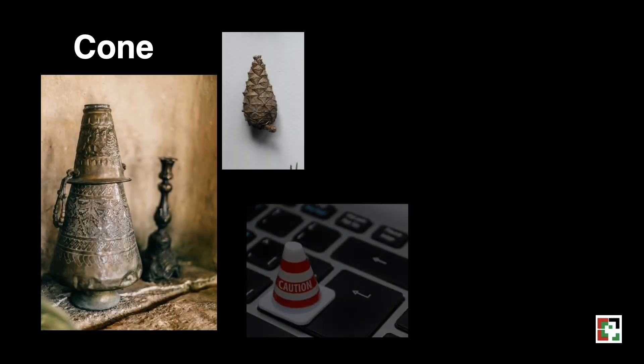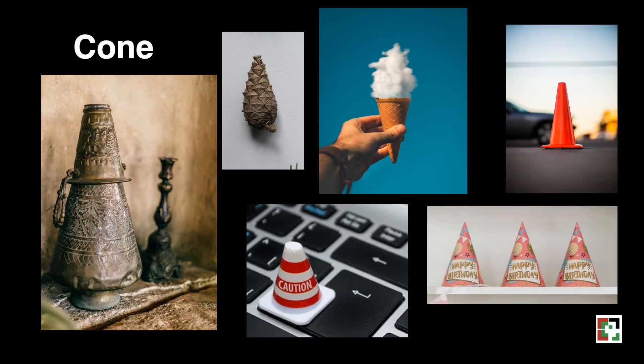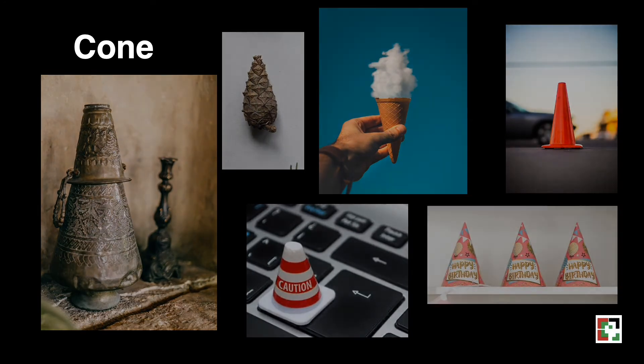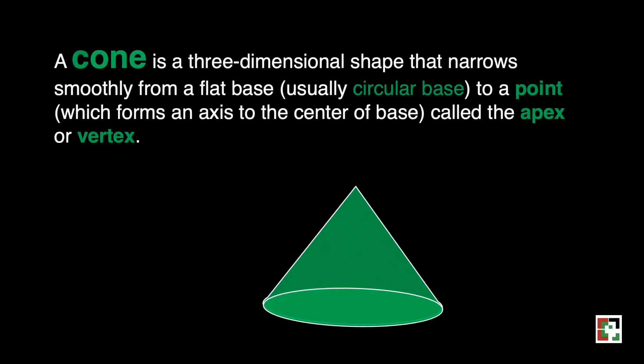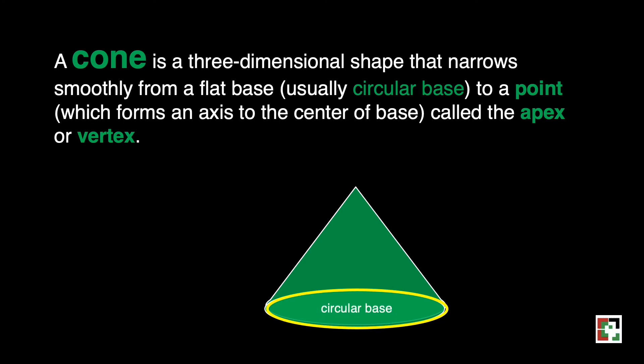The next one is a cone. Have you seen a cone before? These are some examples of a cone. A cone is a three-dimensional shape that narrows smoothly from a flat, usually circular base to a point which forms an axis to the center of the base called the apex. This is our circular base, and this is our apex.